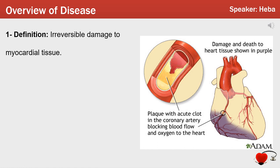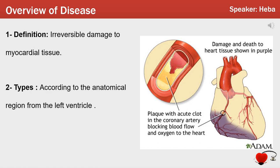Moving on to the types, infarctions are categorized according to the anatomic region where they occur from the left ventricle as follows. They can be anterior, posterior, lateral, septal, circumferential, and a combination of whichever type above.